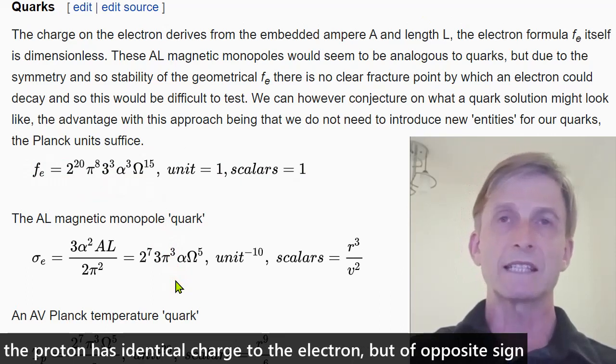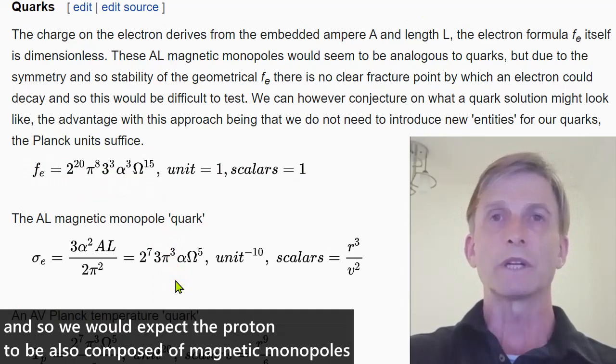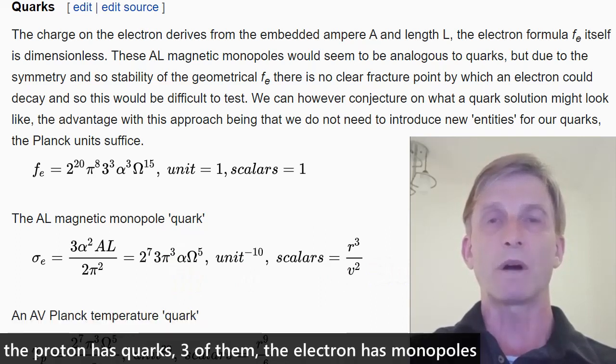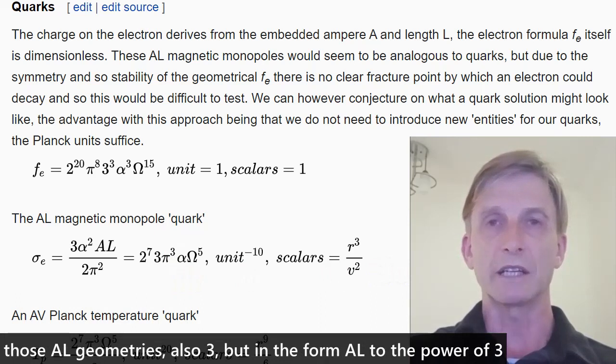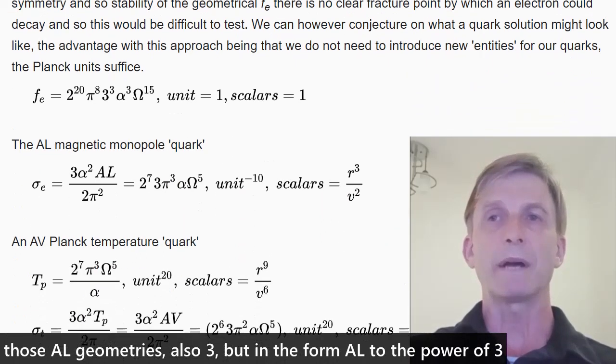The proton has identical charge to the electron, but of opposite sign. And so we would expect the proton to be also composed of magnetic monopoles. The proton has quarks, three of them. The electron has monopoles. Those AL geometries, also three, but in the form AL to the power of three.